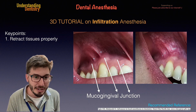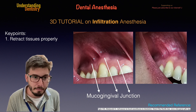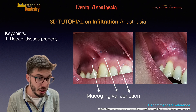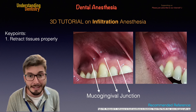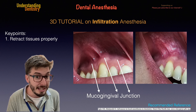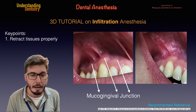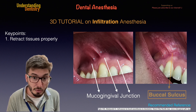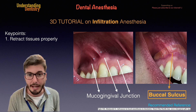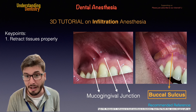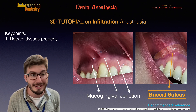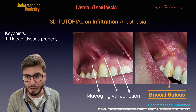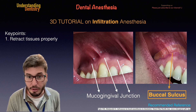You are seeing on your screen the mucogingival junction. Below this line we have keratinized tissue of the gingiva, and above this line we have the oral mucosa. We want our needle not exactly at the beginning of the mucosa, but in the buccal sulcus. This area of the buccal sulcus is stretched because you are retracting the tissues properly, which also helps you see properly where you are going with your needle.